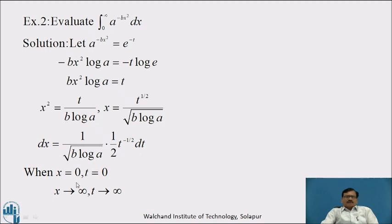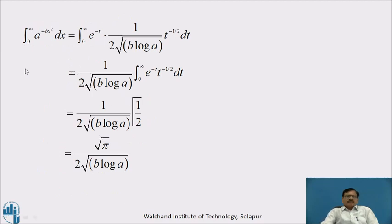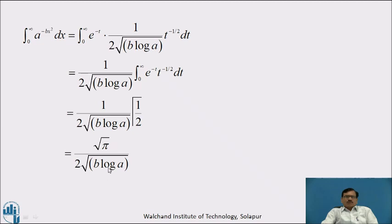Accordingly we change the limits: when x equal to 0, t equal to 0, and when x tends to infinity, t tends to infinity. Therefore, the given integral from 0 to infinity of a raised to minus bx square dx equals integration from 0 to infinity of e raised to minus t into 1 by 2 root b log a into t raised to minus 1 by 2 dt, which equals 1 by 2 root b log a into integration from 0 to infinity of e raised to minus t into t raised to minus half dt, which equals 1 by 2 root b log a into Gamma of 1 by 2, since n minus 1 is minus 1 by 2, so n is 1 by 2. This equals root pi divided by 2 root b log a.